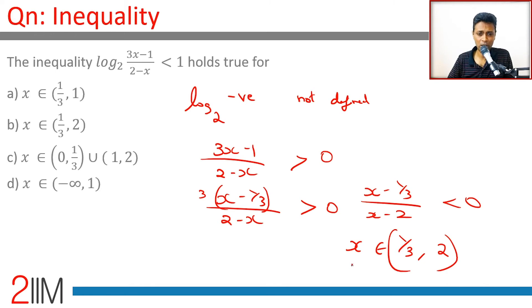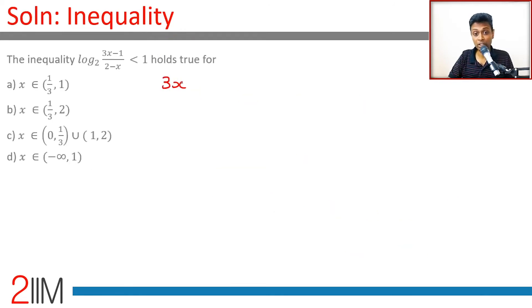Now let's go to the inequality part. Log to the base 2 is less than 1. If this number were equal to 2, then log 2 to the base 2 is 1. If it is any more than 2, this won't hold good. So the second inequality we are dealing with is (3x - 1)/(2 - x) is less than 2.